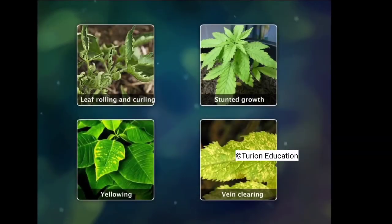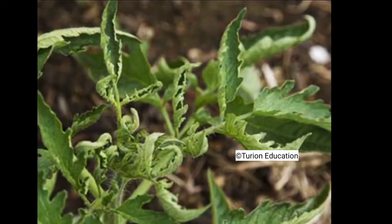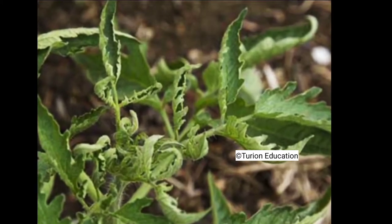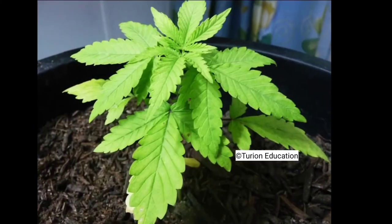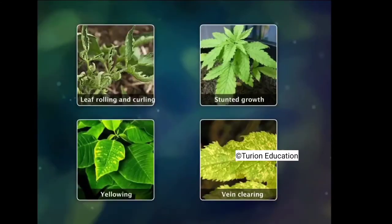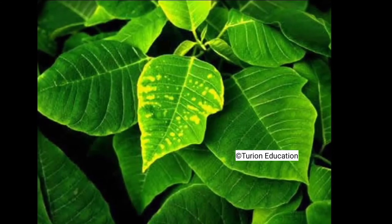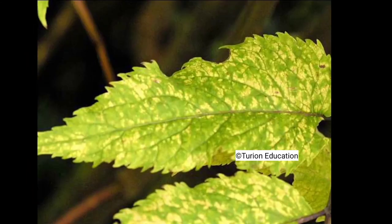Symptoms of viral disease in plants range from mosaic formation, leaf rolling and curling, stunted growth, yellowing, and vein clearing.